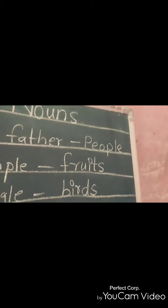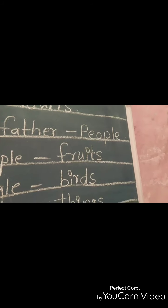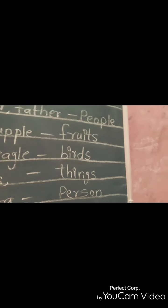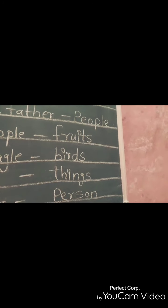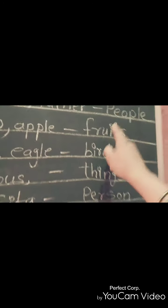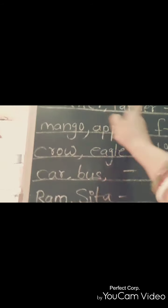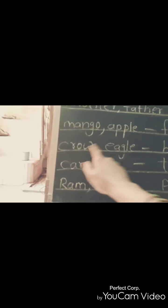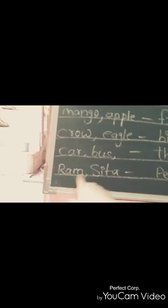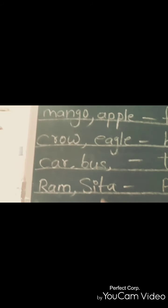But today our topic is noun. So noun is the name of a people, fruit, birds, things, person means mother, father, mango, apple, crow, eagle, car, bus, Ram, Sita. These all are noun.